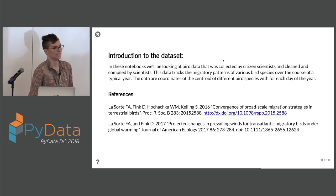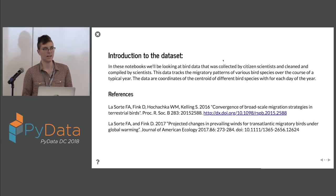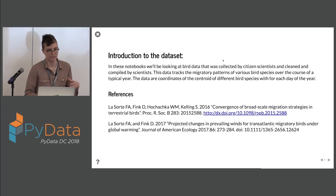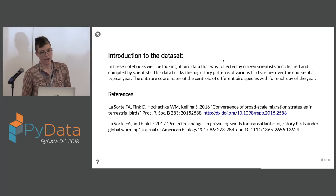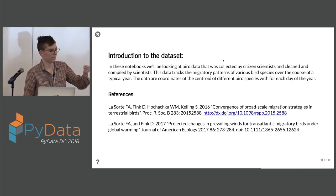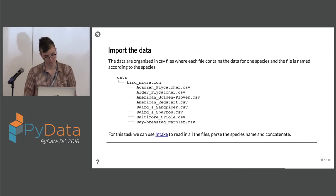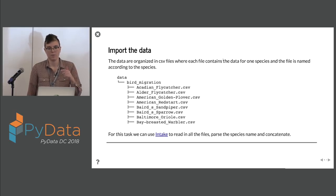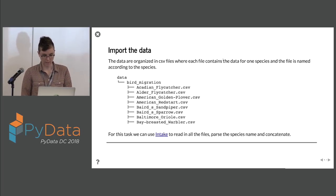We're going to be looking at this bird migration dataset. It was collected by citizen scientists recording different species, lat/lon, and day of year, then compiled into the centroid of a particular species at each day of the year. The data is organized in CSV files where each file is a particular species and each row is a day of the year with lat/lon as the columns.